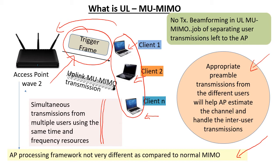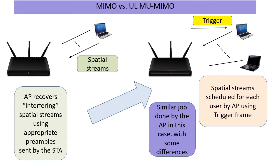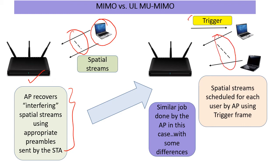Does this require any feedback beamforming? None. Unlike downlink MU-MIMO, Uplink MU-MIMO does not require any feedback sounding, which is a big plus. To highlight the difference: normal MIMO on the uplink involves a station sending multiple streams to an AP; the AP recovers this using appropriate preambles attached as part of the transmission and using channel estimates. In Uplink MU-MIMO, similarly, spatial streams come from different users, all clearly specified and following the guidelines in the trigger frame — preambles also come in, and the AP does a very similar job.